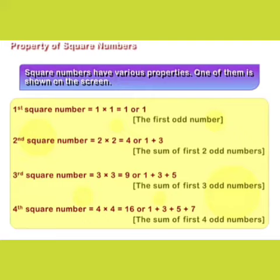Third square number = 3 × 3 = 9, or 1 + 3 + 5 (the sum of first three odd numbers).